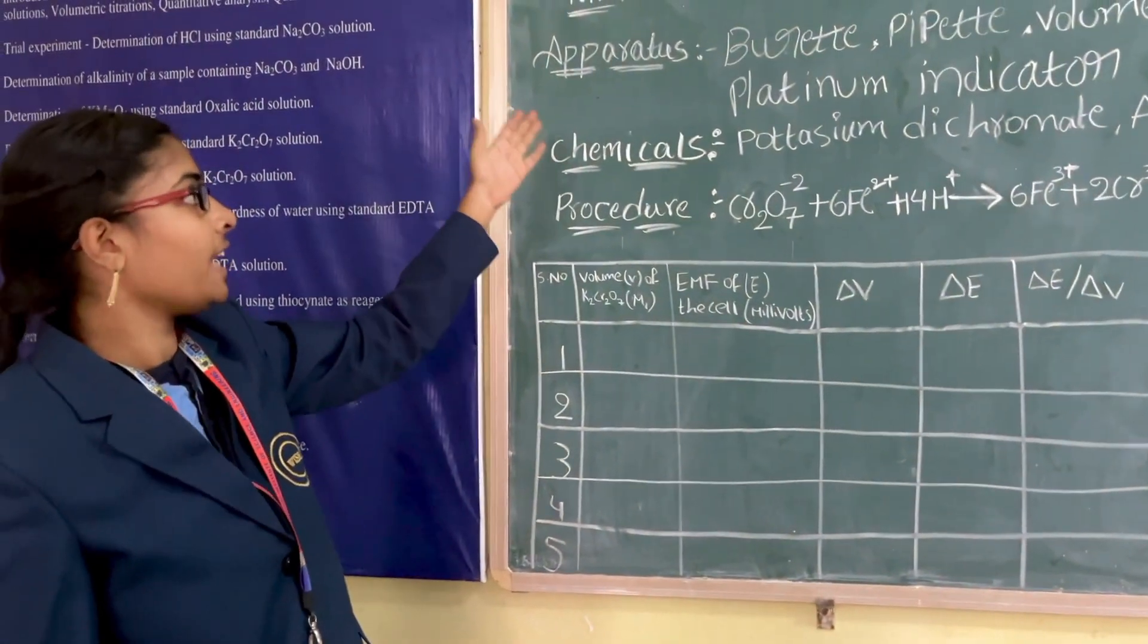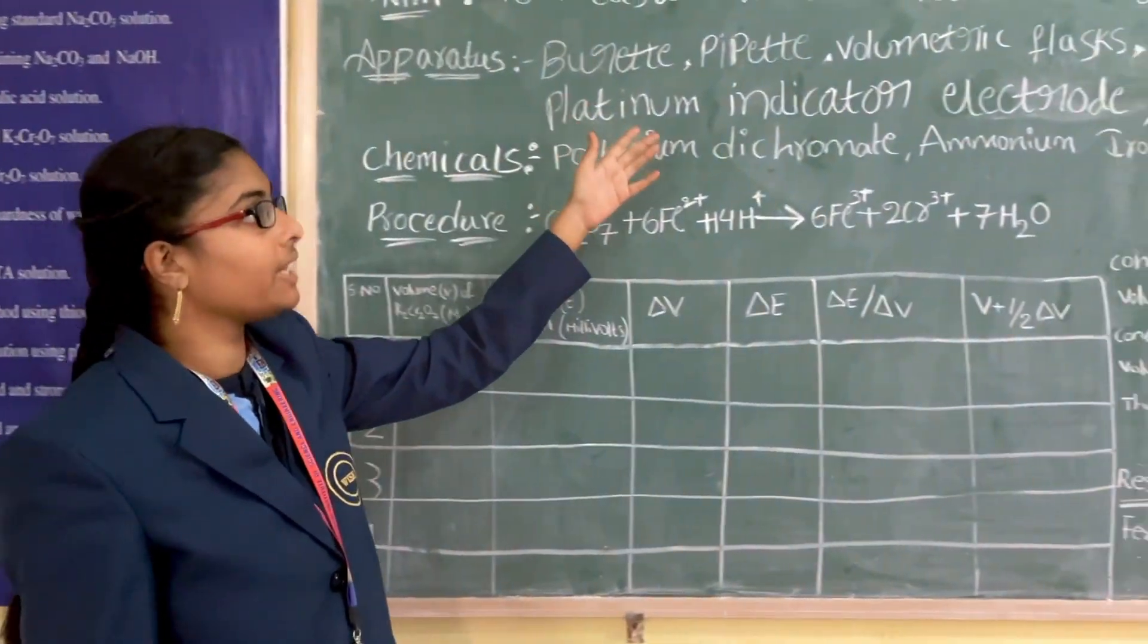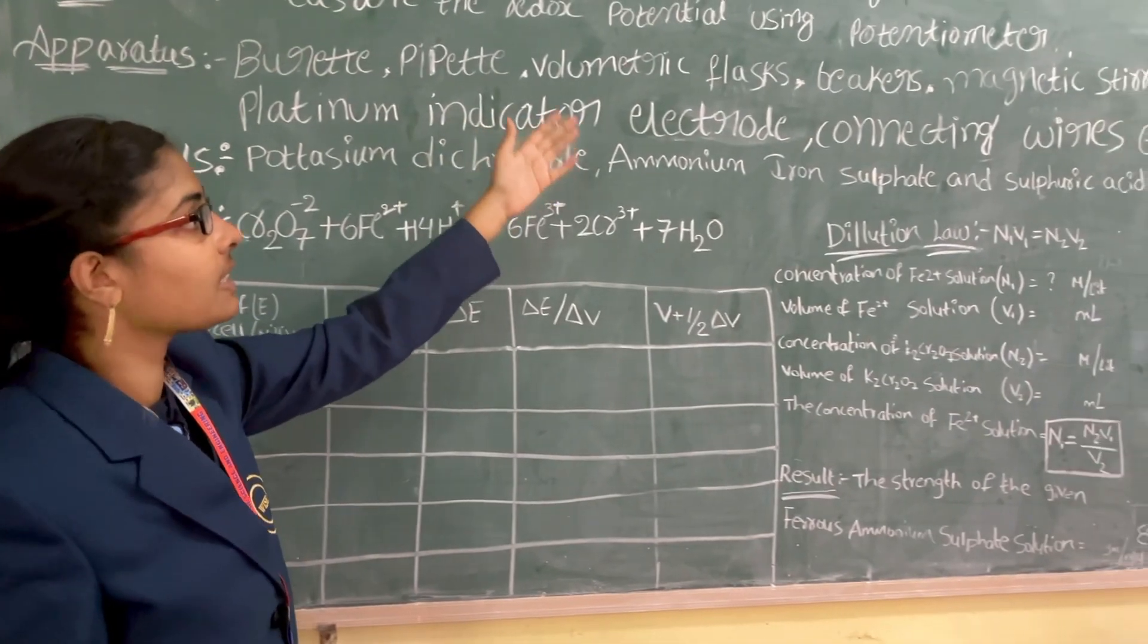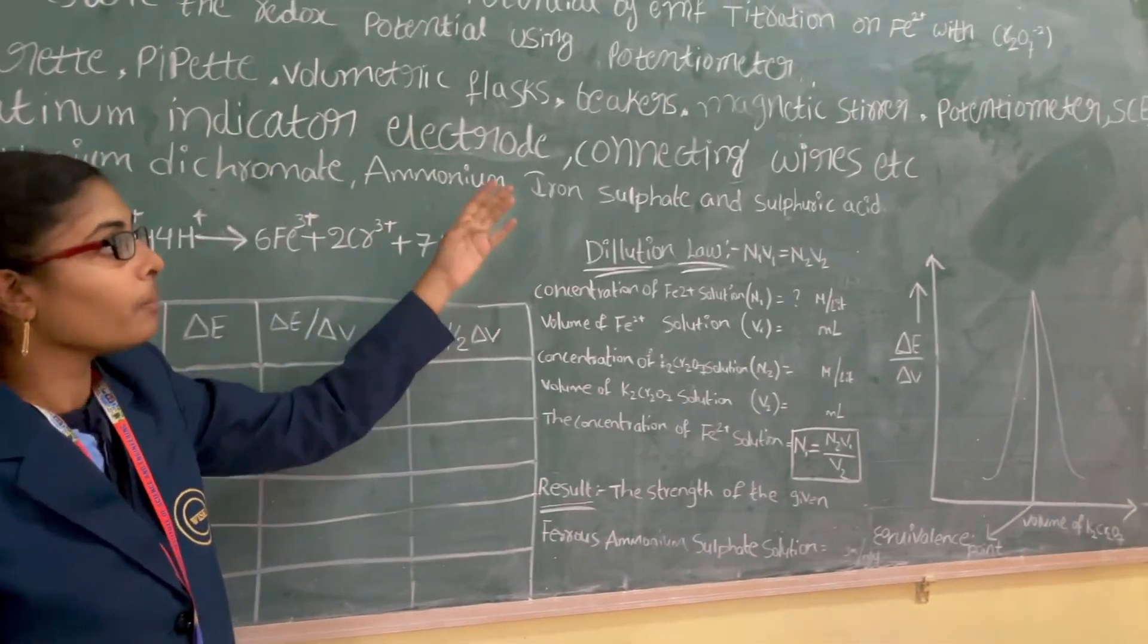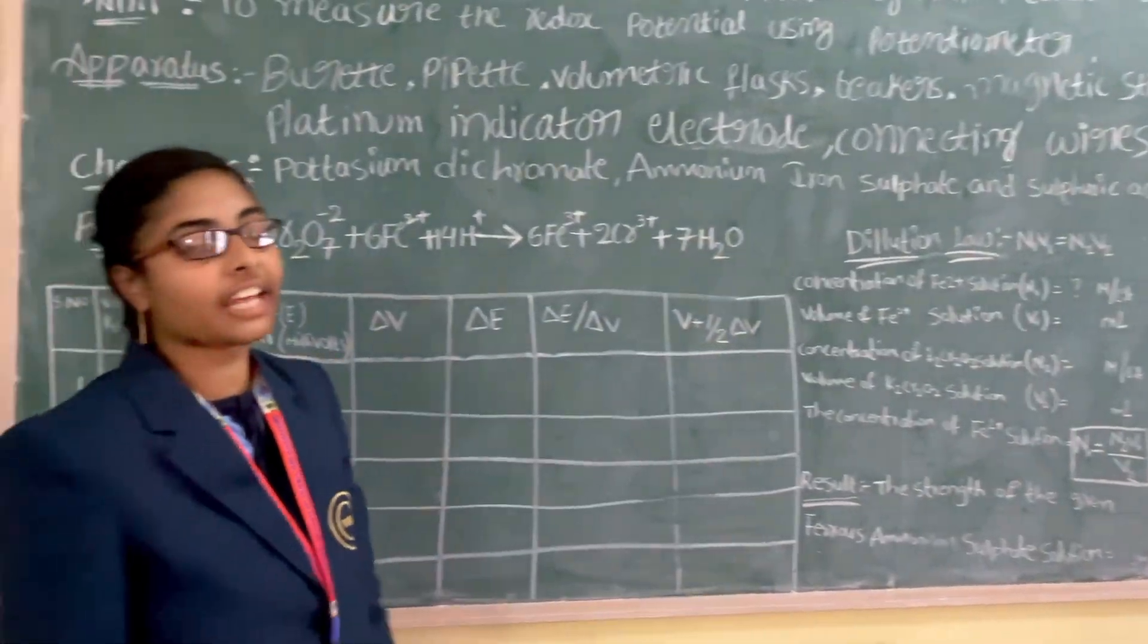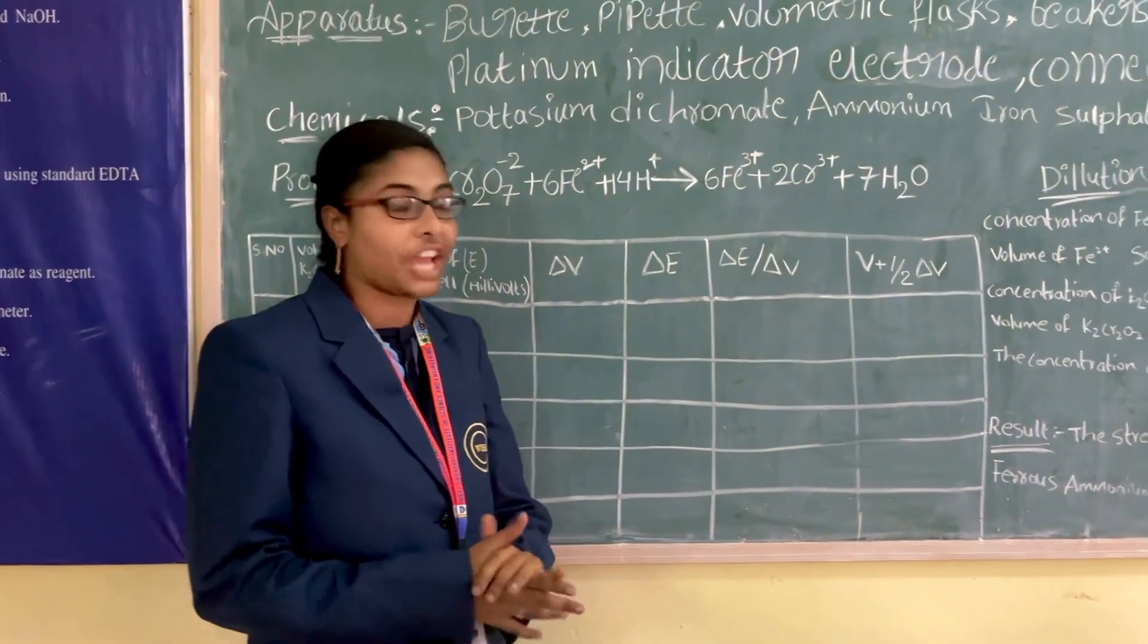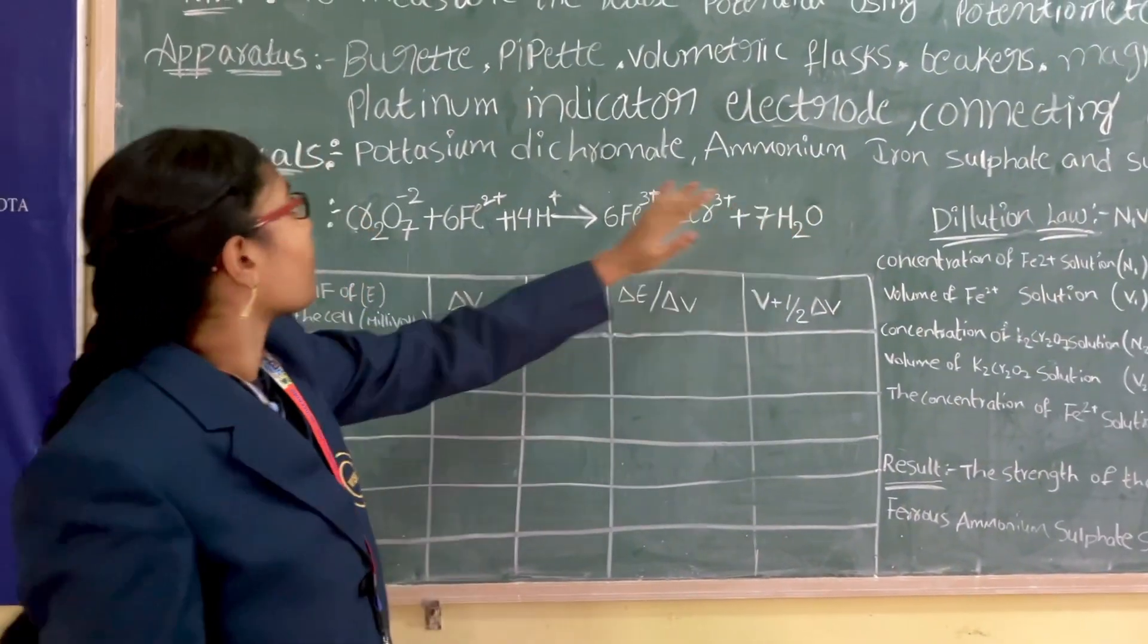Here is the required apparatus: burette, pipette, volumetric flask, beakers, magnetic stirrer, potentiometer, and SCE - saturated calomel electrode.